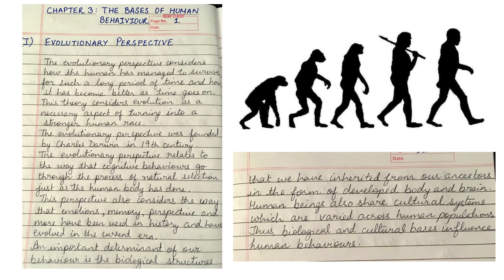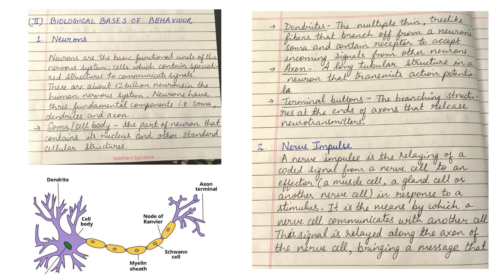An important determinant of our behavior is the biological structures that we have inherited from our ancestors in the form of a developed body and brain. Human beings also share cultural systems which are varied across human populations. Thus, biological and cultural bases influence human behaviors. Coming to the biological basis of behavior first.